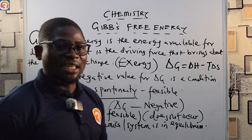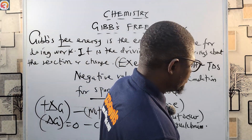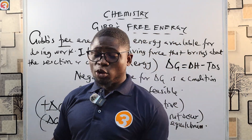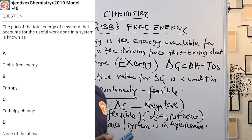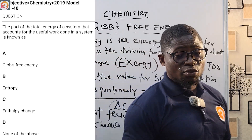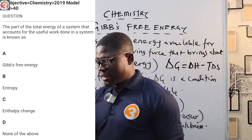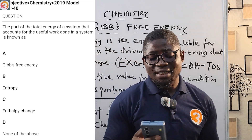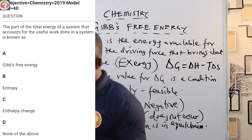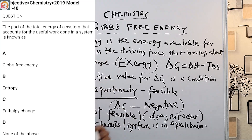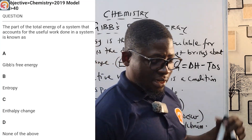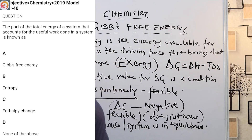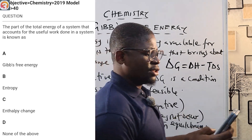Let us bring everything together. Gibbs free energy is the energy available for doing work and is the driving force that brings about reaction or change. It is also called exergy. The formula is ΔG = ΔH − TΔS. Now for the 2019 question: the answer is option A — Gibbs free energy.